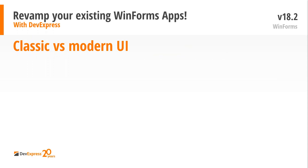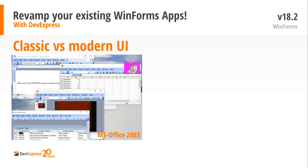So before we go into revamping, let me talk a bit about classic versus modern UI. If I show you this picture, you'll probably all remember this — it's one of the Microsoft Office versions, specifically 2003. What was obviously very refreshing at that particular point in time was the nice customizable toolbars with some 3D effects and some gradients here and there. Back then, it looked pretty awesome.